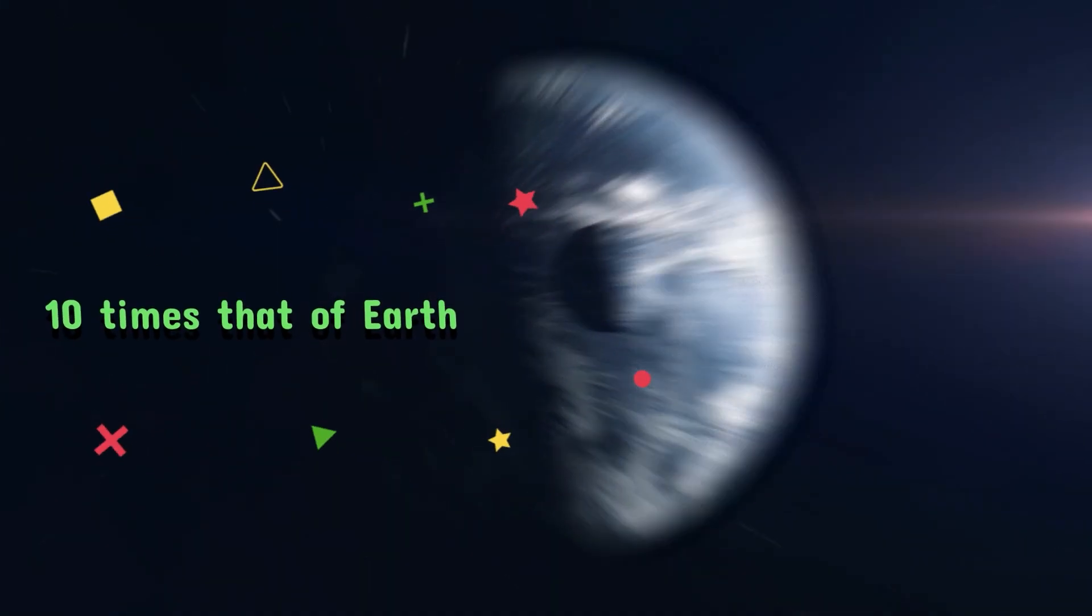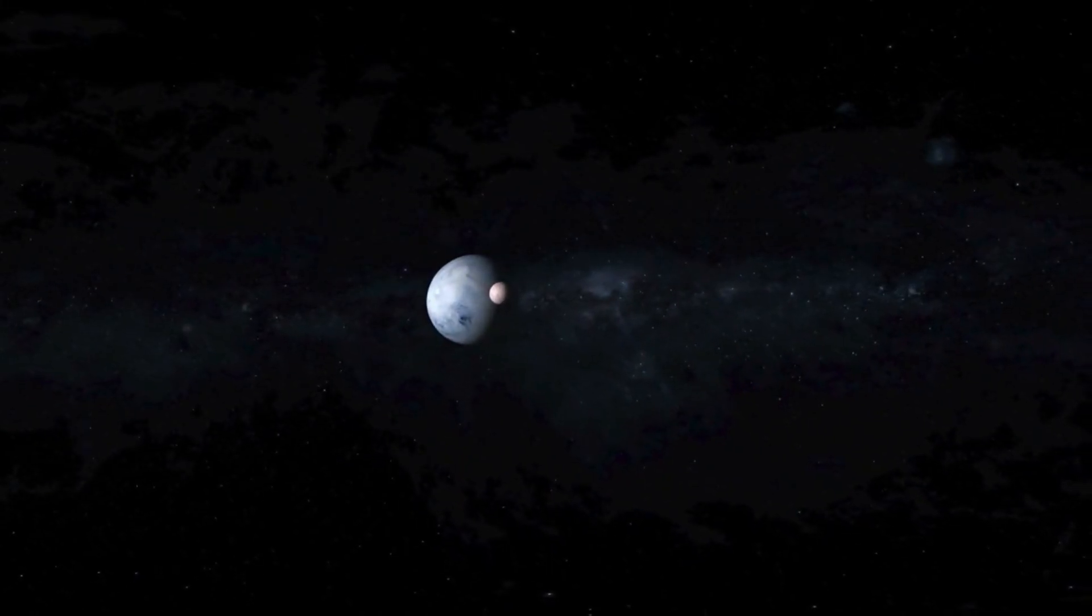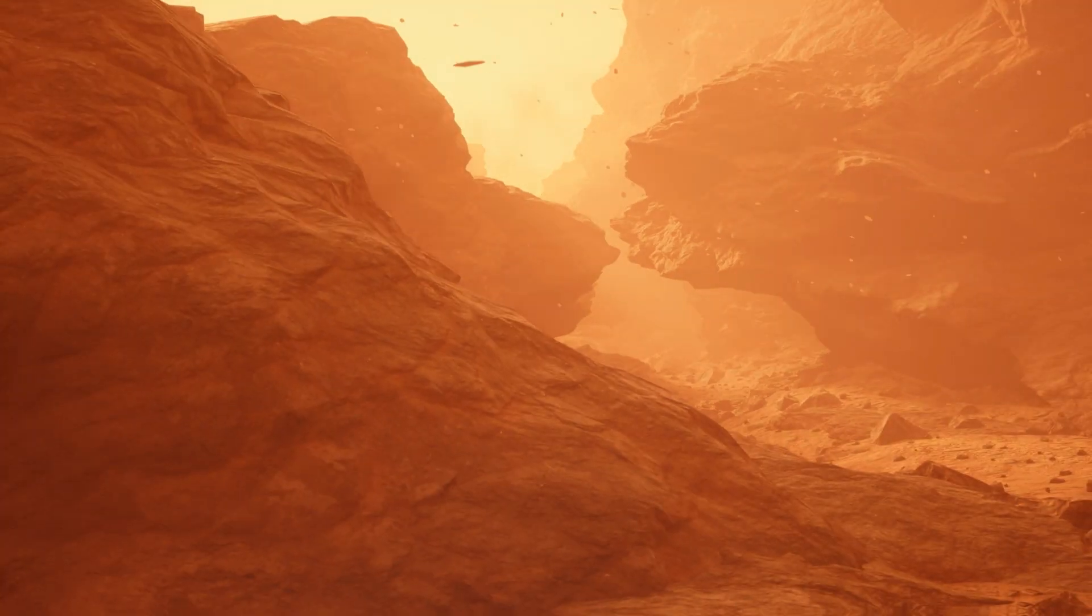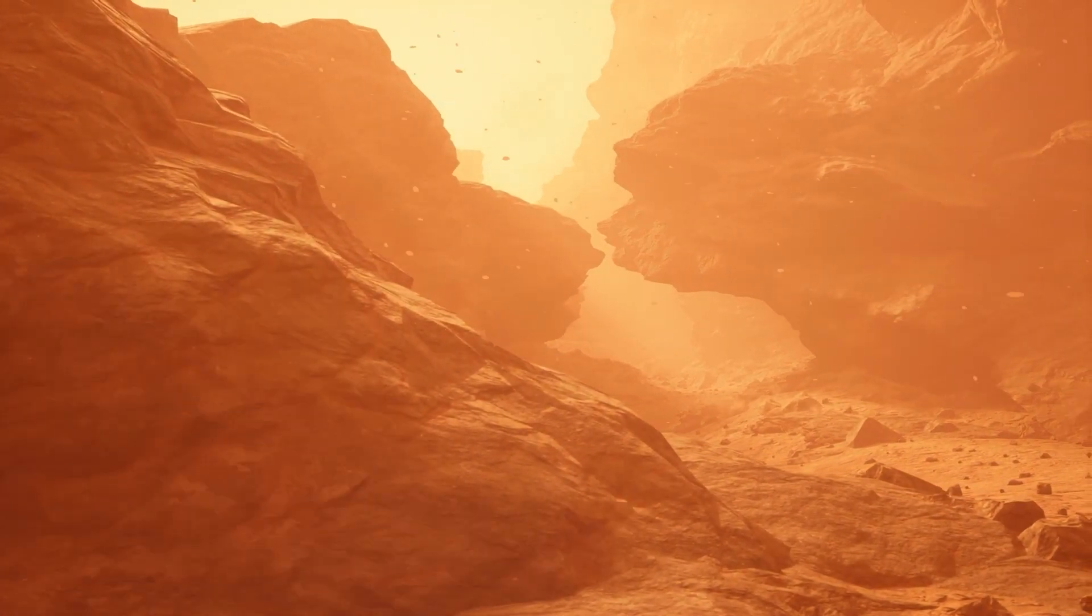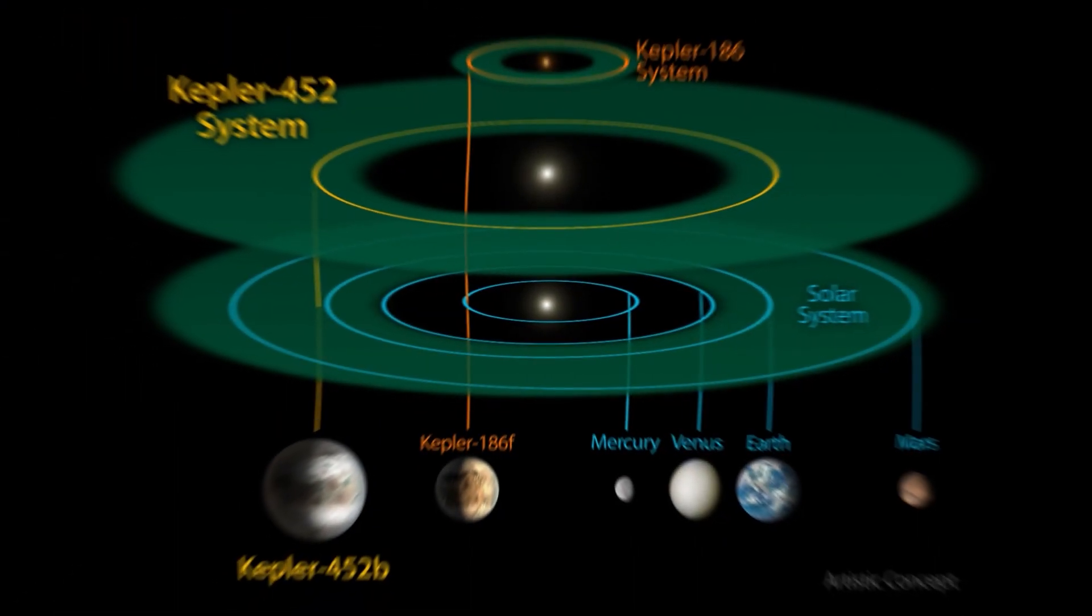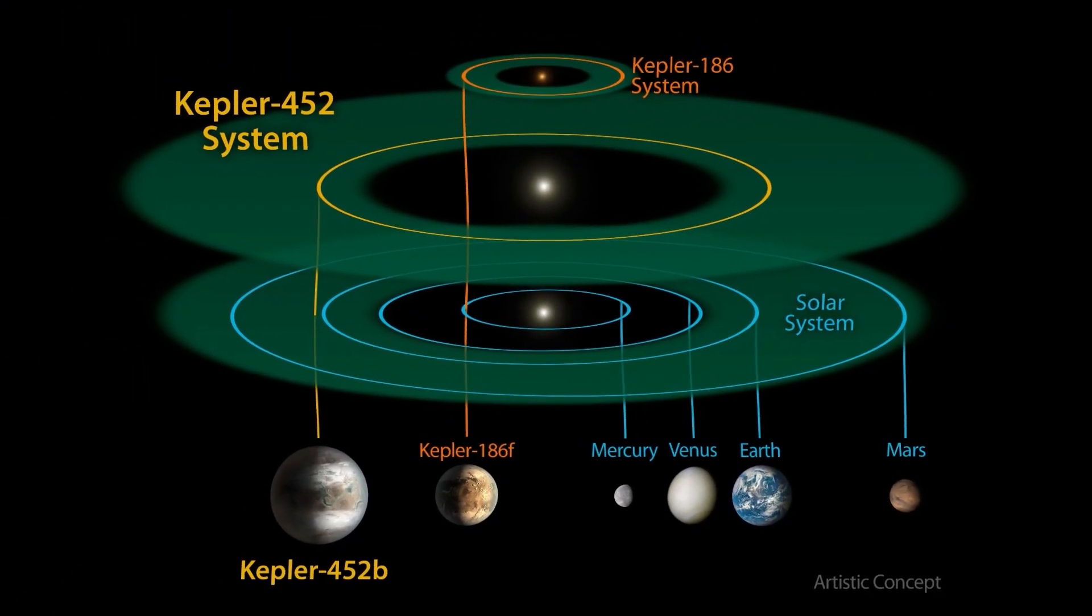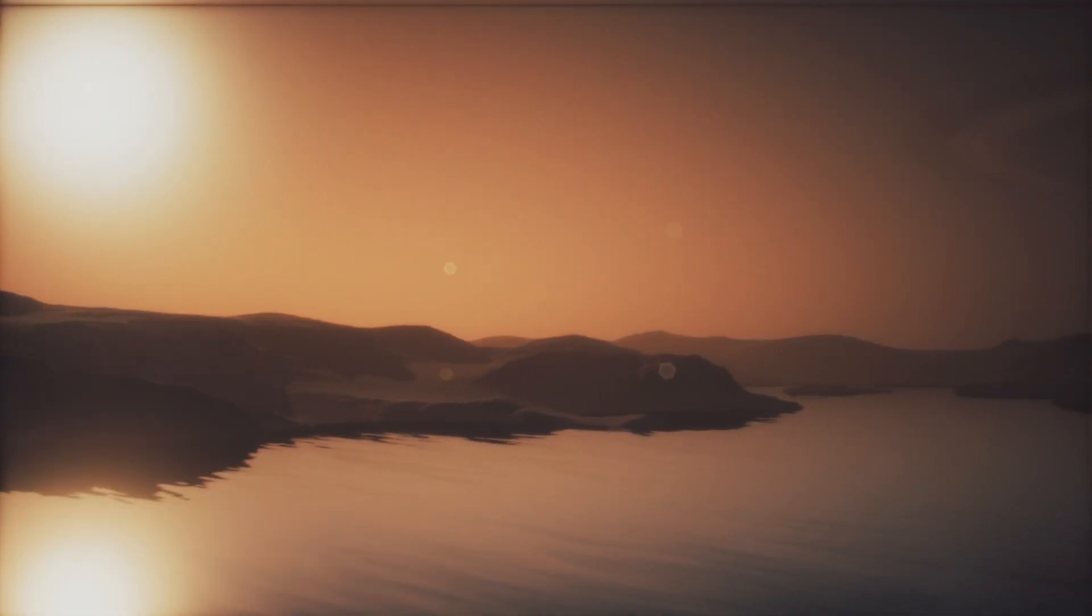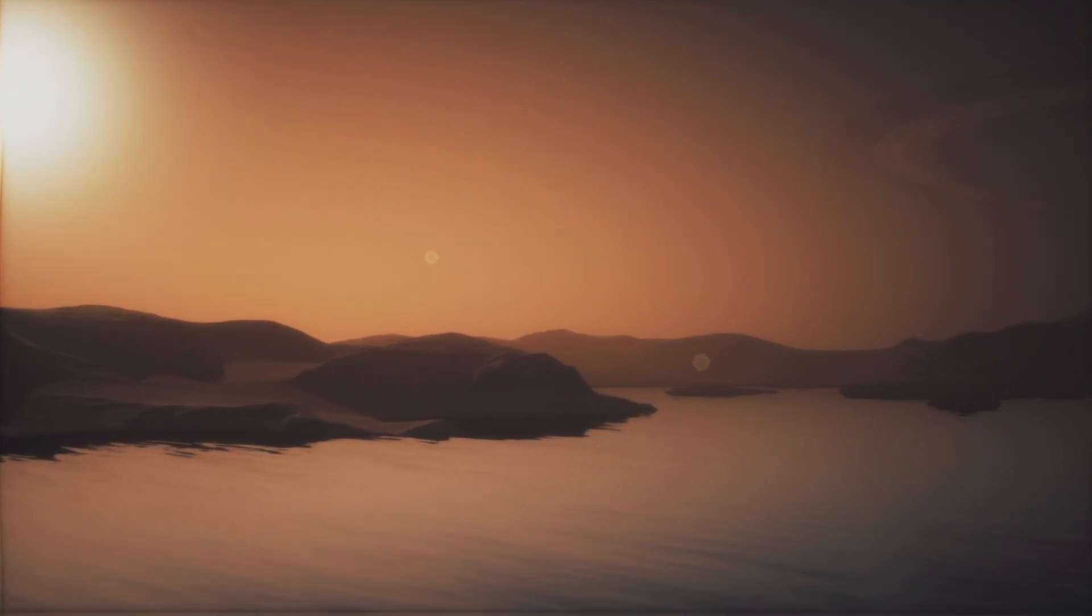With a mass nearly 10 times that of Earth, Kepler-725c falls into the category of Super-Earths, planets with masses between that of Earth and Neptune. These planets are large enough to retain significant atmospheres but small enough to potentially have solid surfaces. Its slightly eccentric orbit means that it spends a portion of its 207.5-day year within the habitable zone, where surface temperatures could, in theory, support liquid water.